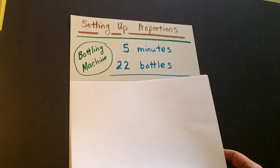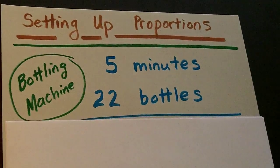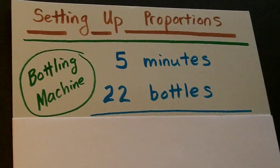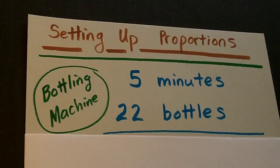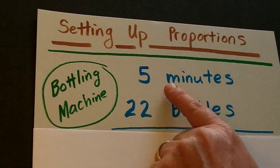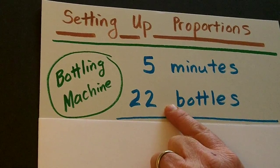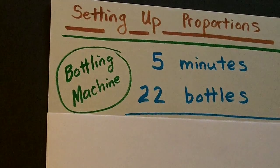Now the first thing we need to do is we have to know how to set up proportions. So maybe we have a problem like this: a bottling machine, let's say at the Coca-Cola factory, in five minutes it can fully produce 22 bottles of Coca-Cola.